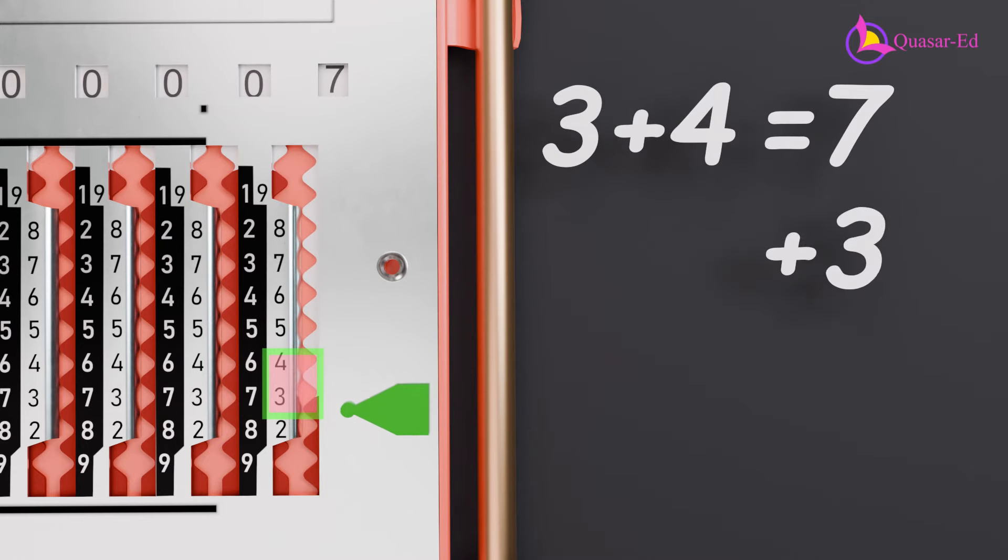Adding three again brings us to a white section, so we pull up, shift to the side, and pull one down, resulting in 10.